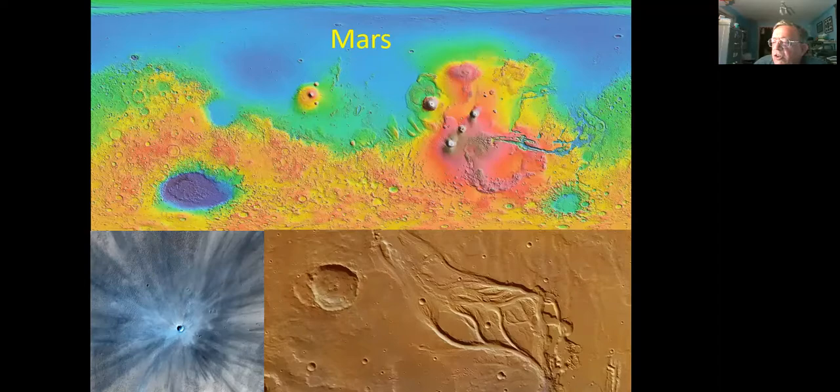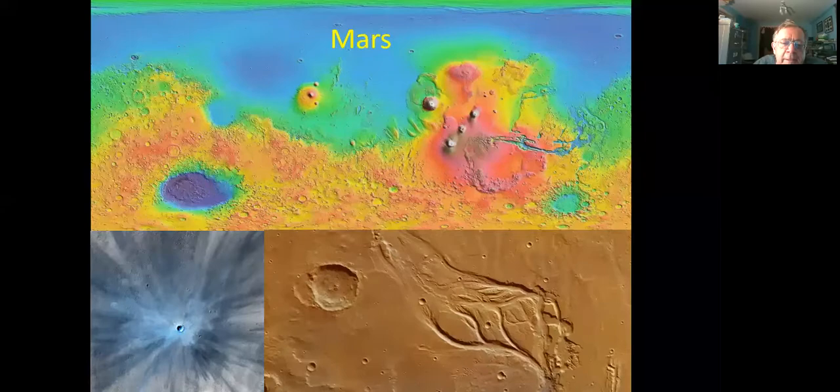To the bottom left, we've got a meteor impact on the surface of Mars that's very fresh, just to prove that these things do still happen.